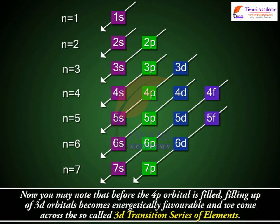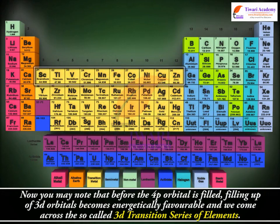Now you may note that before the 4p orbital is filled, filling up of 3d orbitals becomes energetically favorable, and we come across the so-called 3d transition series of elements.